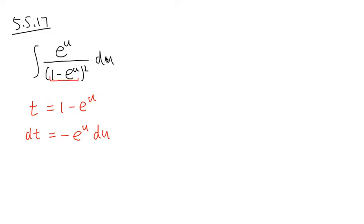I will have to isolate the du, right? So du will be dt over negative e to the u, like this. All right, I'm going to take this integral in terms of u to the t world. This is the t substitution. Integral e to the u...